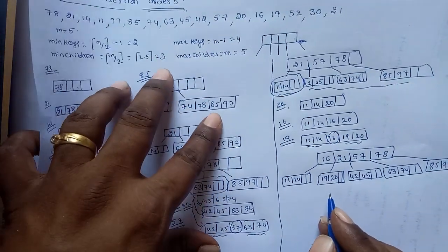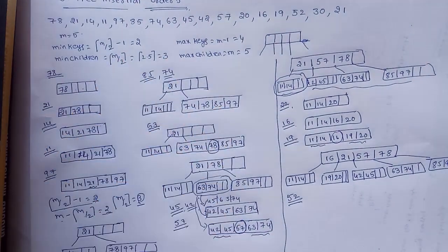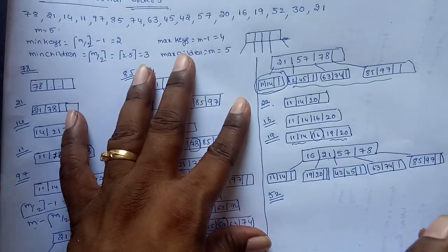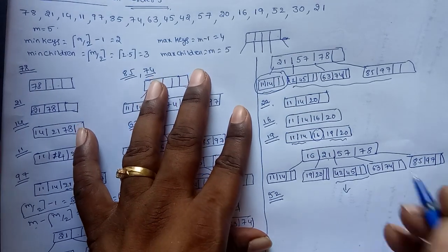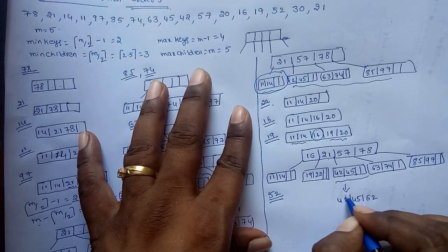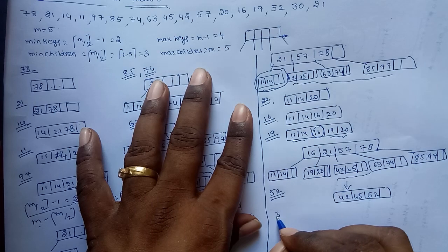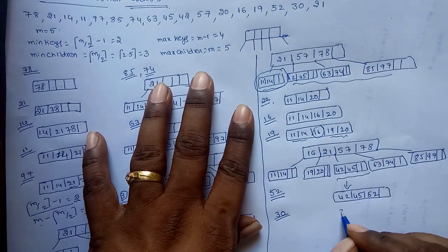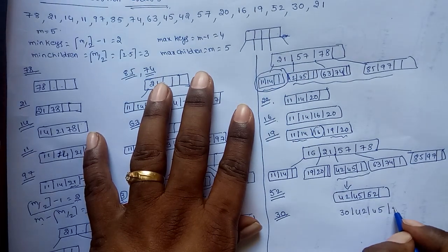Up to 19, insertion is completed. Now insert 52: it is greater than 21 and less than 57, so it goes to the middle node. That node becomes 42, 45, 52. Now insert 30: it also falls in the same range, so the node becomes 30, 42, 45, 52.